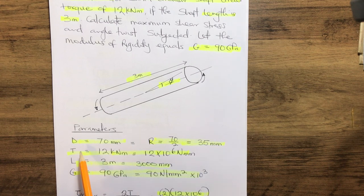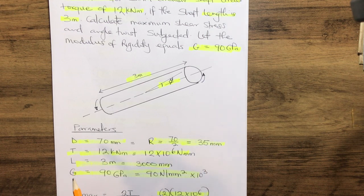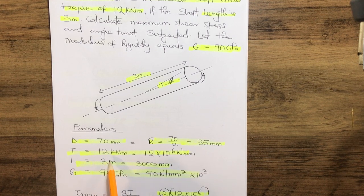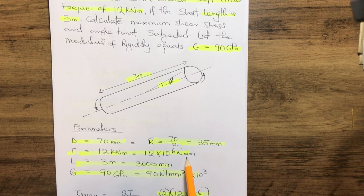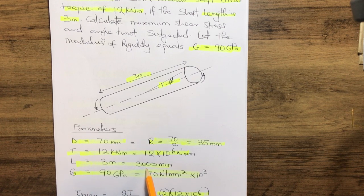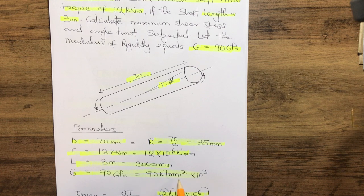Pulling out the parameters: the diameter is 70 millimeters, so the radius equals 70 over 2, which gives us 35 millimeters. The torque is 12 kilonewton meter, which equals 12 × 10^6 newton millimeters. The length is 3 meters, which converts to 3000 millimeters. The modulus of rigidity G is 90 gigapascals, equal to 90 × 10^3 newton per millimeter squared.